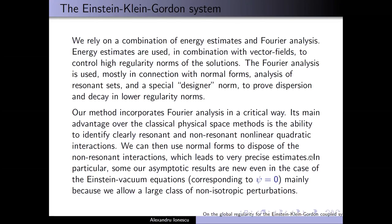The asymptotic results we prove are new even for the Einstein vacuum equations, mainly because we allow a large class of perturbations. We are not asking that the perturbations agree with the Schwarzschild metric at first order — they don't have an M over R at first order. They are non-isotropic and consistent with solutions of the constraint equations. The metric is allowed to have some mass in one direction and some other mass in another direction — the metric is allowed to be non-isotropic.